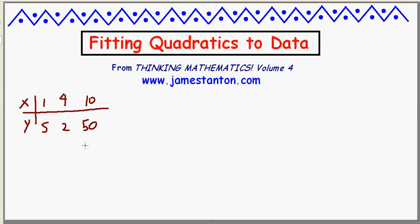Can you find a quadratic that fits that data precisely? Graphically, that means I'm trying to find a u-shaped curve that goes to the point (1,5) and the point (4,2) and the point (10,50).